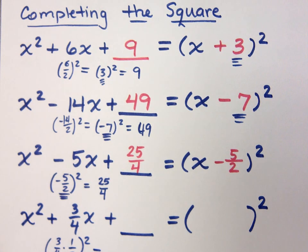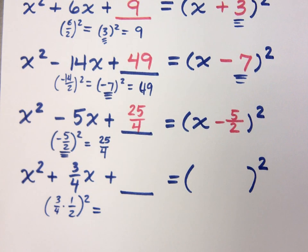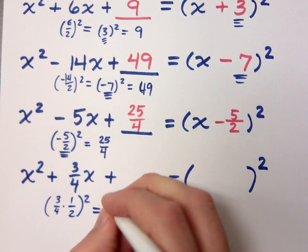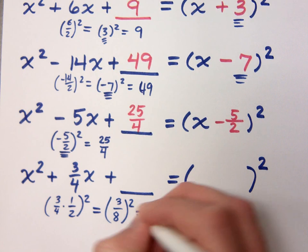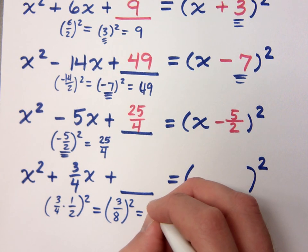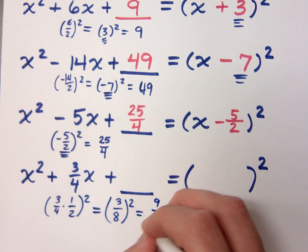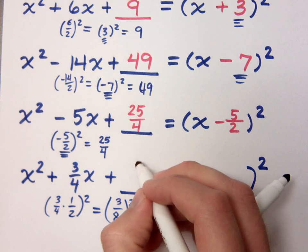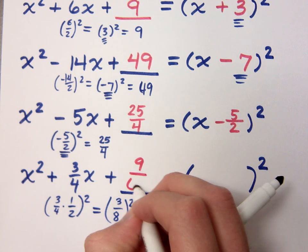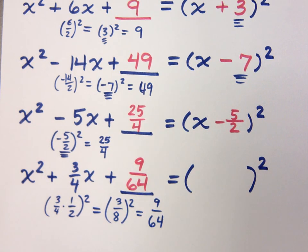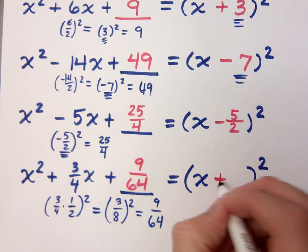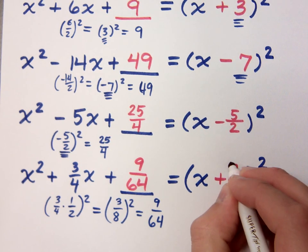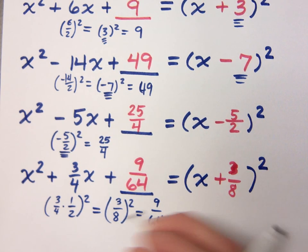So, what's 3 fourths times 1 half? It's just fractions. No need to be scared. It's 3 over 8 squared, and that gives me 9 over 64. So, 9 over 64 is what goes here, but what goes inside the factored form? 3 over 8. Plus or minus? Plus 3 over 8. It's plus 3 over 8 because that's what I had right here.